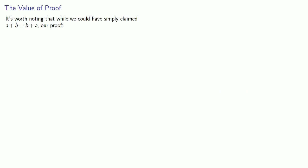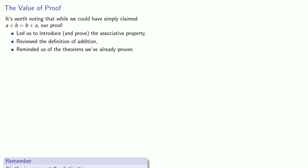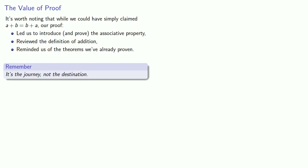It's worth noting that while we could have simply claimed a plus b equals b plus a — and we often do that in lower-level courses — our proof led us to introduce and prove the associative property. Proof is a way of discovering things you might not have known about. It also caused us to review our definition of addition and reminded us of the theorems we've already proven. Proof is a good way of studying mathematics, and in proof, the thing to remember is that it's the journey, not the destination.